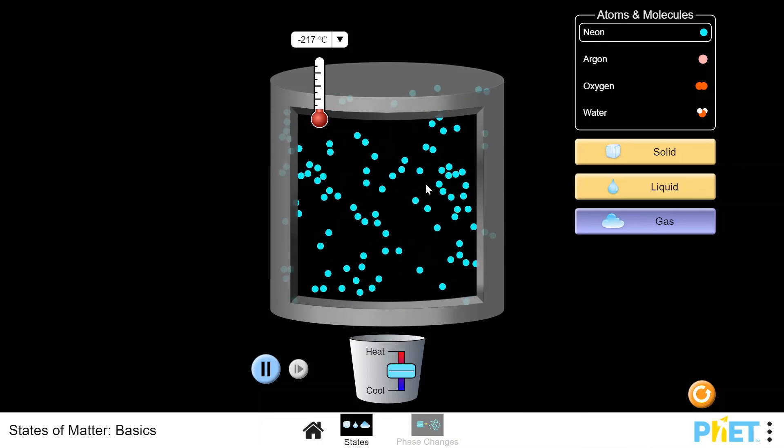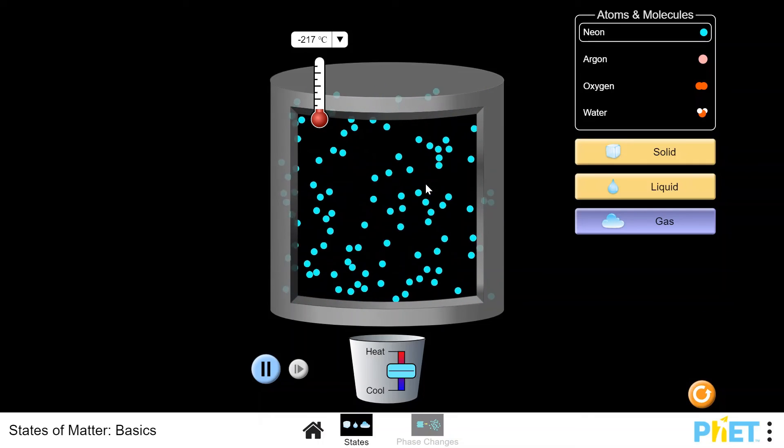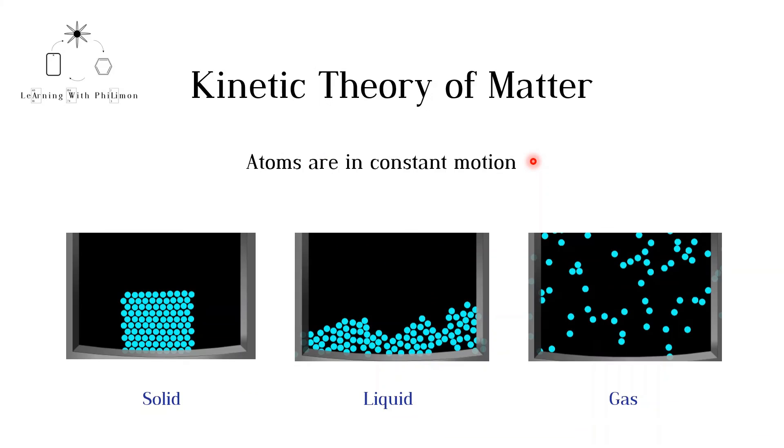The air we breathe is a gas and consists of different elements, such as nitrogen and oxygen, and different compounds, such as carbon dioxide.